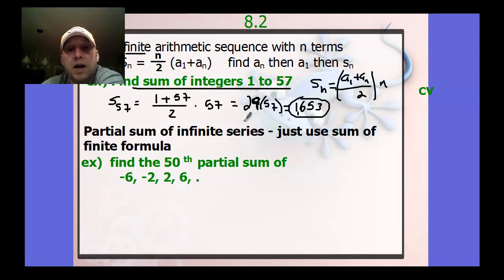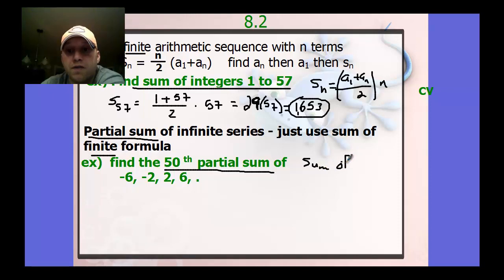Much easier to use a formula than to actually punch in all those numbers in a calculator. Partial sum of an infinite series. We can just use the sum of the finite formula from above. It's the same thing. Find the 50th partial sum. So the 50th partial sum means the sum of 50 terms. Now, it doesn't have to start from the first term. Typically it will, but it doesn't have to.